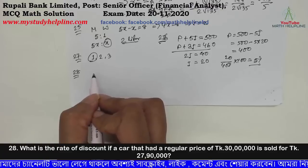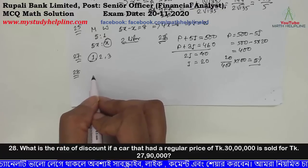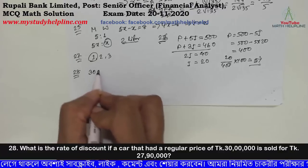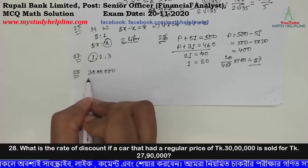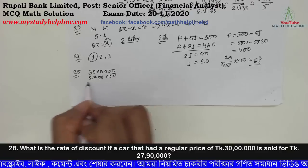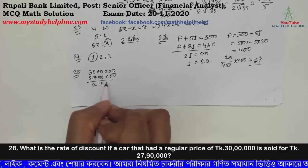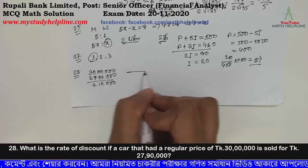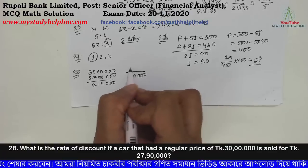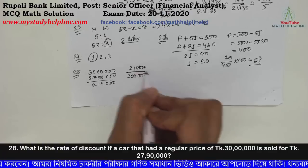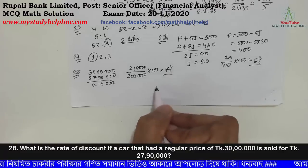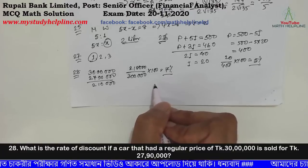After calculation, the interest rate comes out to 7 percent discounted, which is the value of C.